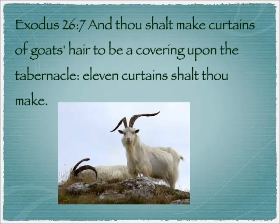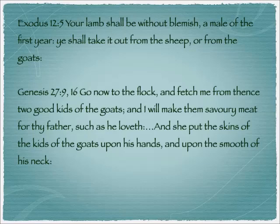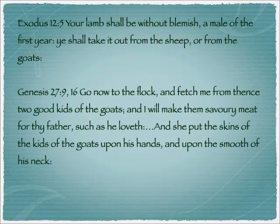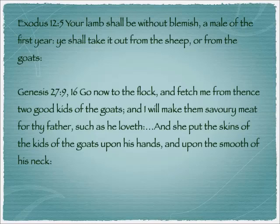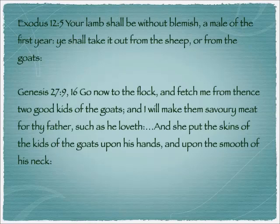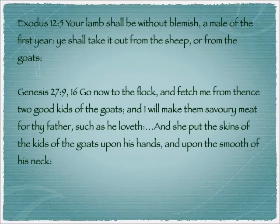The third covering coming down is the goat's hair, Exodus 26:7: 'Thou shalt make curtains of goat's hair to be a covering upon the tabernacle. Eleven curtains shalt thou make.' Now goats have some negative connotations, but in fact, Exodus 12:5 shows they are acceptable for a Passover offering: 'Your lamb shall be without blemish, a male of the first year. You shall take it out from the sheep or from the goats.' In Genesis 27:9 and 16, Rebekah fetched two kids of the goats for savory meat, and she put the skins of the kids of the goats upon Jacob's hands and upon the smooth of his neck — so they have a skin that can appear like a human being on the outside. This is what Rebekah did for Jacob so that he would appear to be Esau.